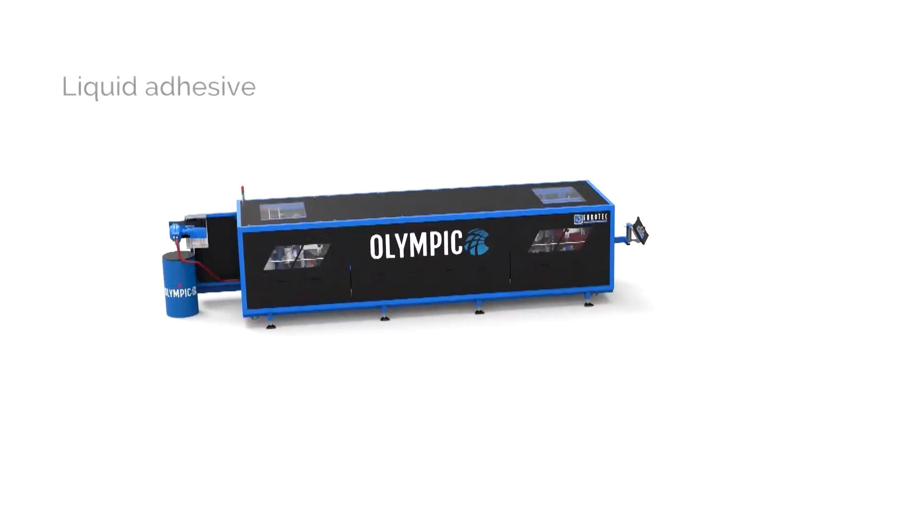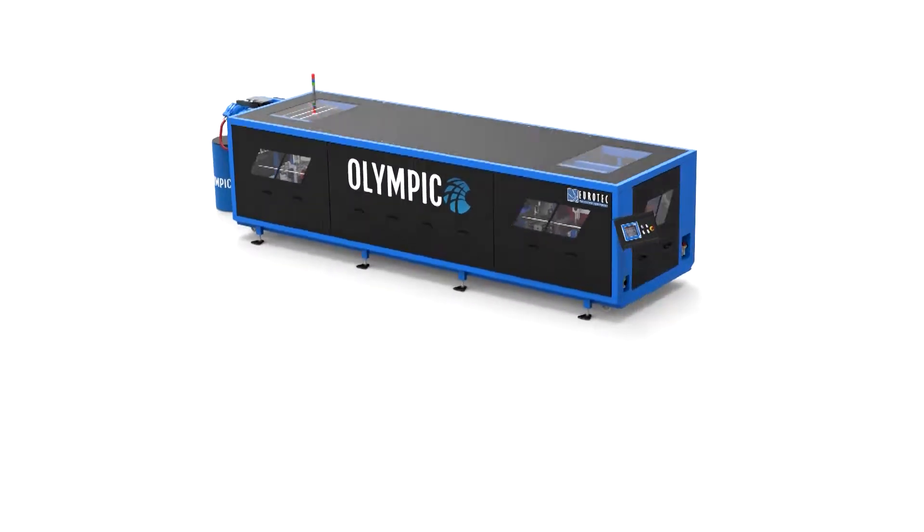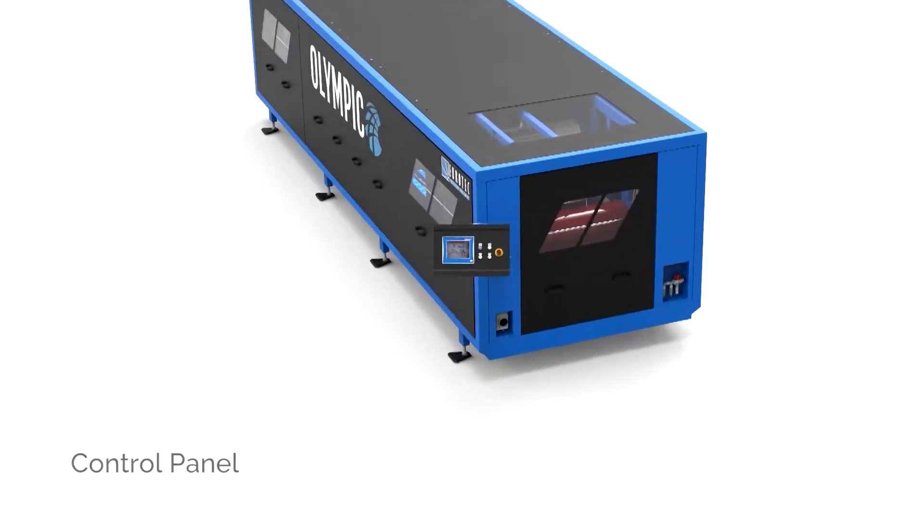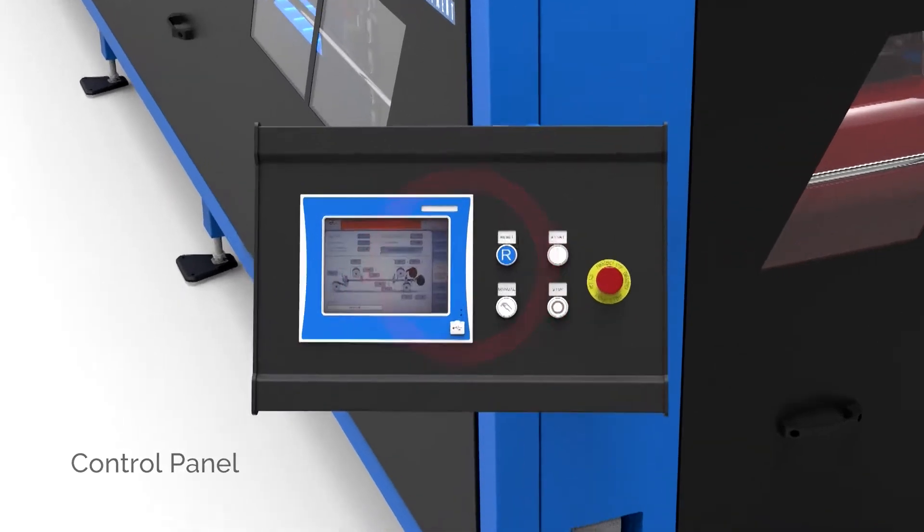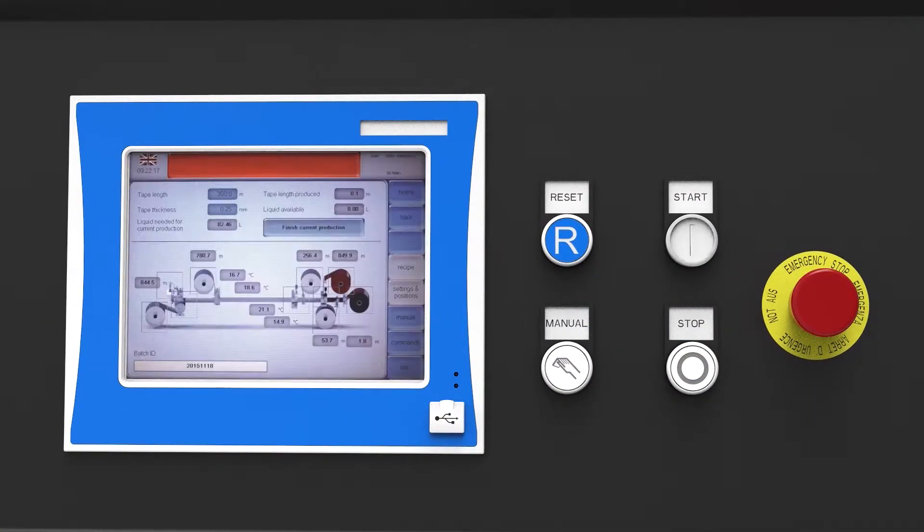We provide you the pre-mixed liquid adhesives in easy-to-mount and ready-to-use cartridges from 200 or 1,000 liters, and you take control from there. You set only the length, width, and thickness, and produce AFT on your own Olympic UV coater.